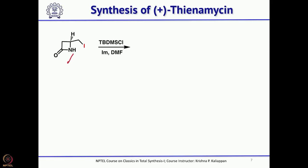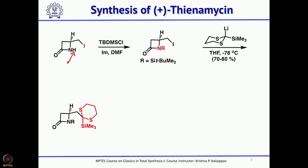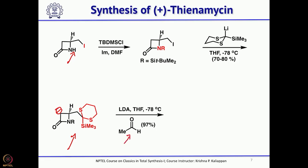The amide NH was protected as TBDMS by treating with TBDMS chloride. Then 2-lithio-2-trimethylsilyl-1,3-dithiane was used to give the corresponding alkylated compound via a simple SN2 reaction. The anion was then generated with LDA and quenched with acetaldehyde to give the aldol product.